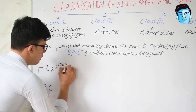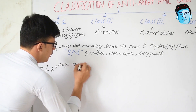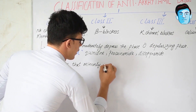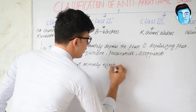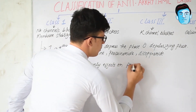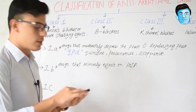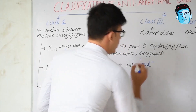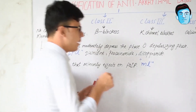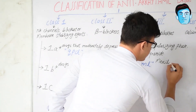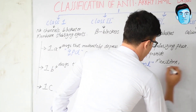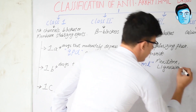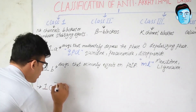Now let's move to class 1b. These are the drugs that minimally affect the phase zero depolarizing phase. For this class we have a mnemonic: ML, where M stands for mexiletine and L stands for lignocaine.